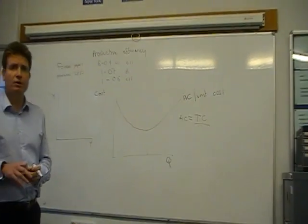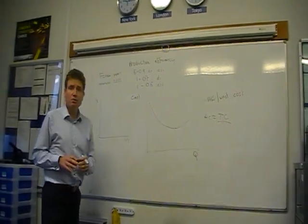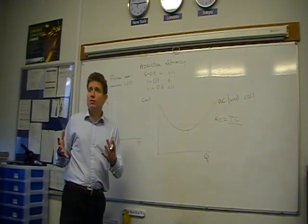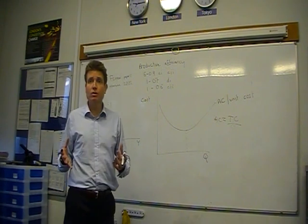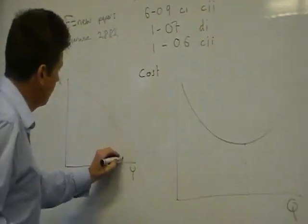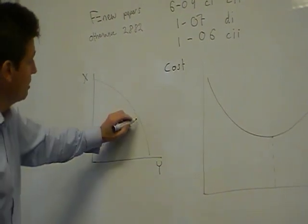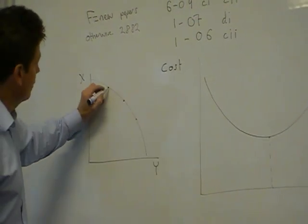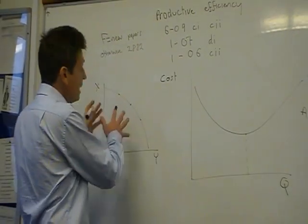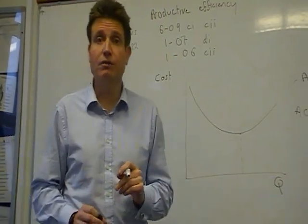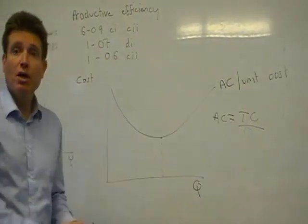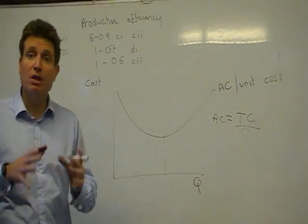Another way of looking at productive efficiency is thinking of it as a PPF — a Production Possibility Frontier. That shows the maximum combination of goods produced with a given set of resources. Therefore, any point on the PPF is also productively efficient. Remember that: any point on a PPF is productively efficient, and it occurs where average costs are at their minimum.